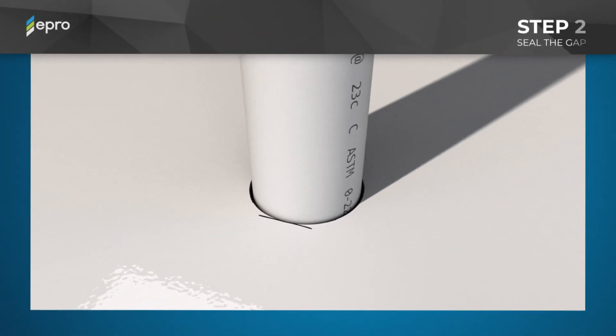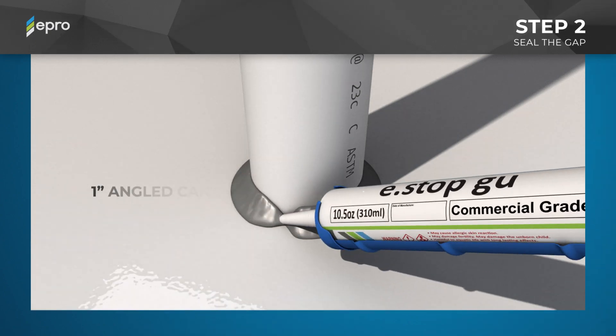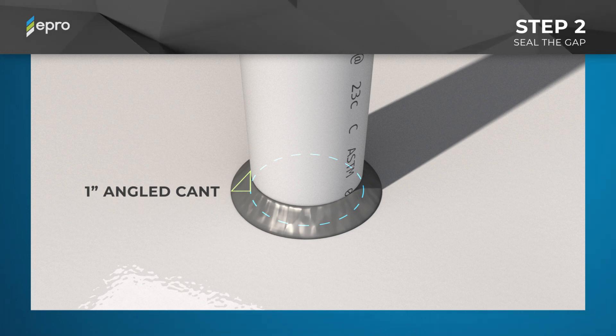Step 2: Seal the gap between the PRETAC field sheet and penetration. Apply E-Stop Goo Water Stop Sealant around the base of the pipe to create a one-inch angled cant that extends onto the pipe and the PRETAC membrane. Tool the sealant into a one-inch cant around the base of the penetration, making sure there are no gaps.